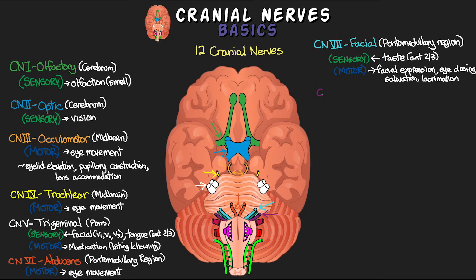Cranial nerve eight is the vestibulocochlear, which originates from the pontomedullary region. This nerve is primarily an afferent sensory neuron and plays an important role in balance and hearing. The name comes from the vestibule, connected to balance, and the cochlea, connected to hearing. You may also hear this nerve referred to as the auditory nerve.